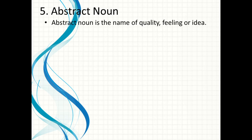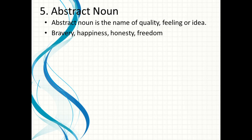Now next one is abstract noun. Abstract noun is the name of a quality, feeling, or idea. Jab hum kisi quality ko, ya kisi feeling ko, ya idea ko ek particular name dete hain, so that name is known as abstract noun. Let's see some examples: bravery, happiness, honesty, freedom.